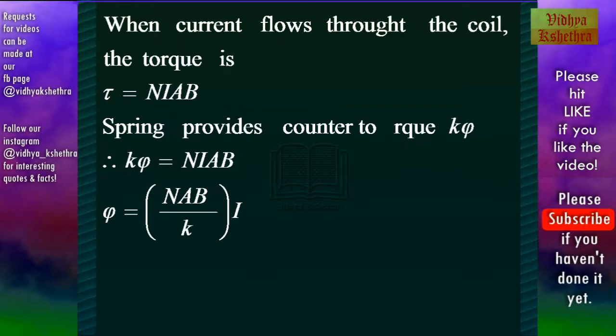Therefore, kφ is equal to n·i·a·B or the total angular deflection φ is equal to (naB/k)·i. Here k is the spring constant or the torsional constant of the spring.